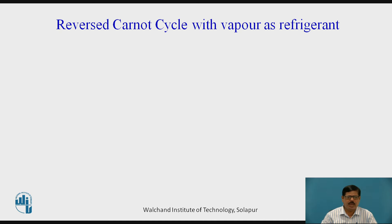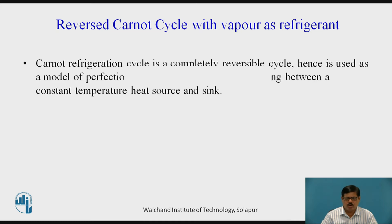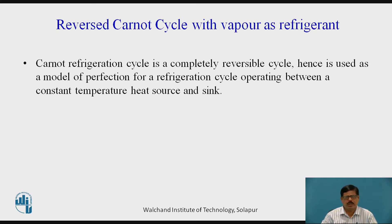We know that basically Carnot cycle is a heat engine cycle. But whenever we reverse the Carnot cycle — when we reverse the directions of heat and work transactions — we get a reverse Carnot cycle. Reverse Carnot cycle can be either air or gas based, but today I am going to discuss reverse Carnot cycle with vapor as refrigerant. Vapors undergo phase changes, and in the vapor compression cycle we use refrigerants which are vapors and pure substances. Therefore, the reverse Carnot cycle with little modification can be used as a vapor compression cycle.